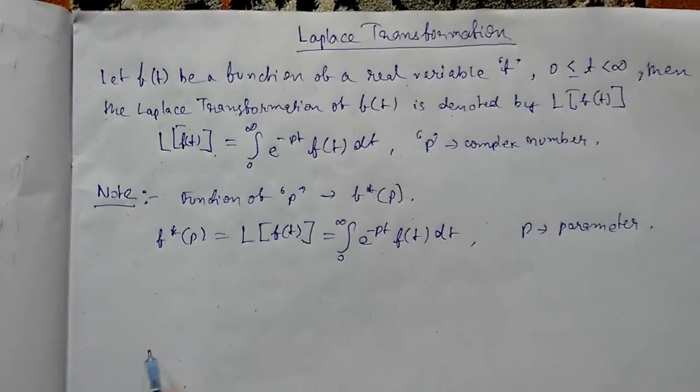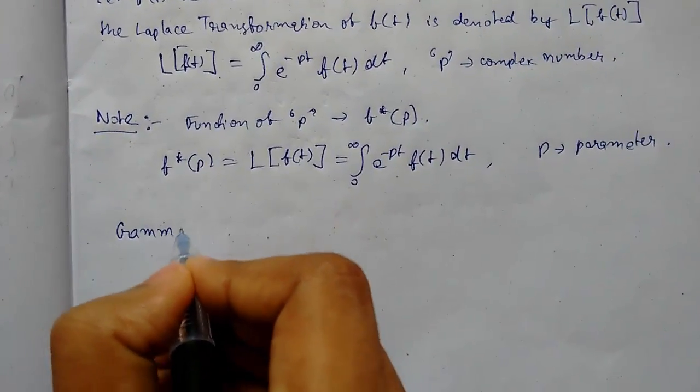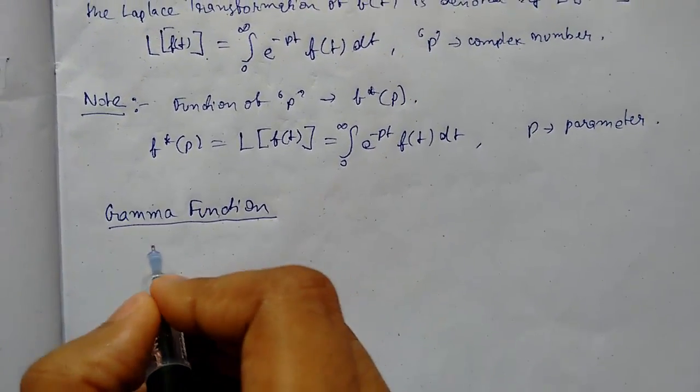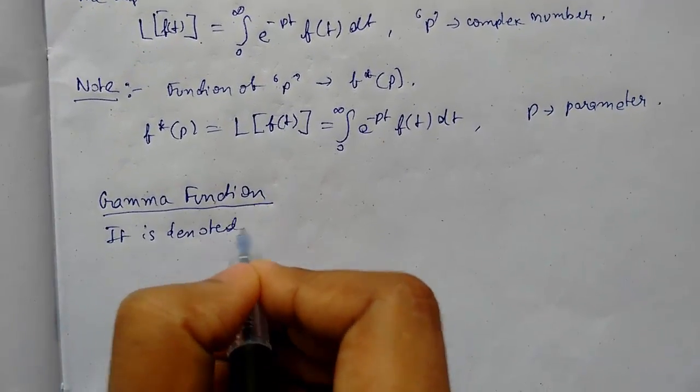So now we will see what is gamma function. Gamma function is denoted by gamma n.